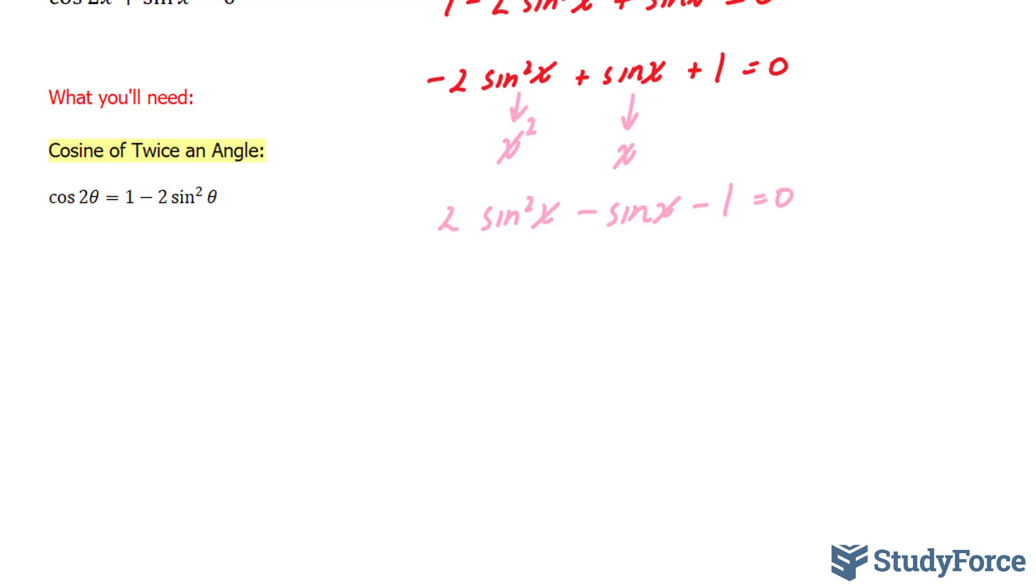Now what I have to do is either use the quadratic formula or factor this like I would factor a quadratic equation. For example, to factor a quadratic equation where the leading coefficient is greater than one, we multiply two and negative one together, we end up with negative two, and then we find two factors that multiply to negative two and add to the middle term. Those two factors are negative two and positive one.